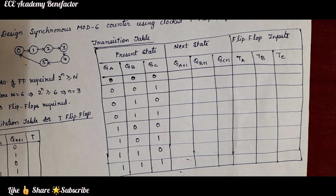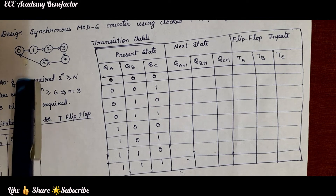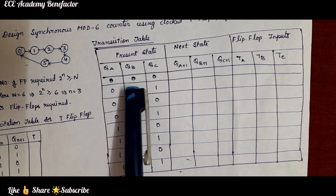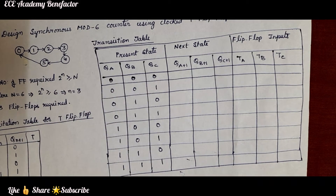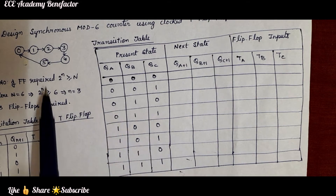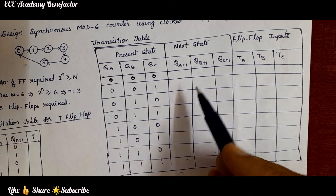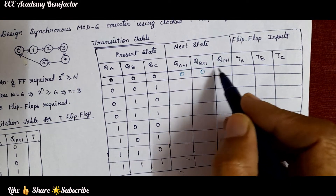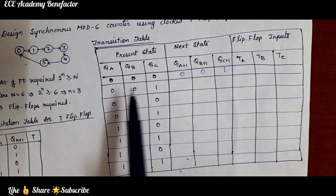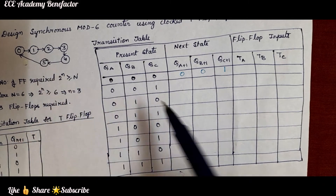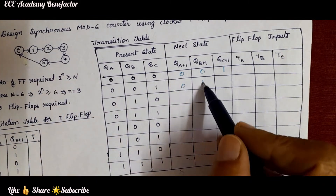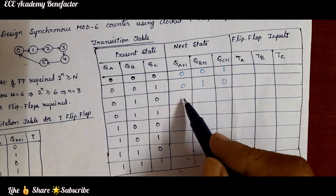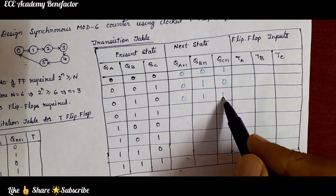The next state is written based on the state diagram. State 000 is 0, and after 0 comes 1, so next state is 001. After 1 comes 2, so next state is 010. After 2 comes 3, so next state is 011. After 3 comes 4, so next state is 100.